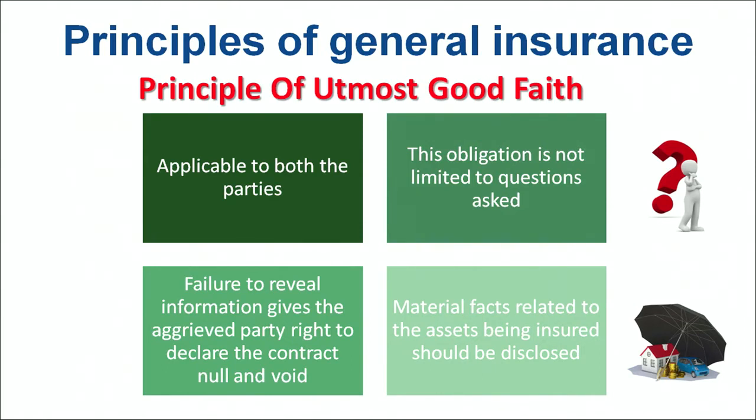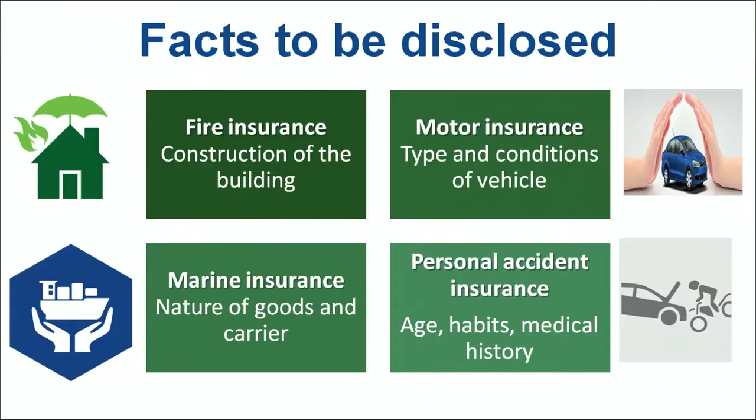Material facts related to the assets being insured should be disclosed. When we talk about fire insurance, we need to be clear about the construction of the building — whether it is for personal or commercial use, what equipment is in the building, whether there are inflammable or explosive materials around, so the insurer can gauge the kind of risk they are covering. Whether you have firefighting equipment can also reduce the risk and lead to lesser premium.